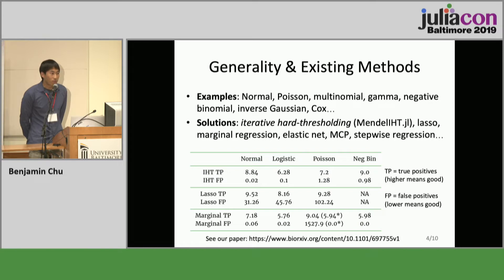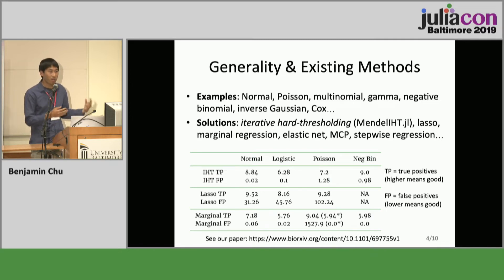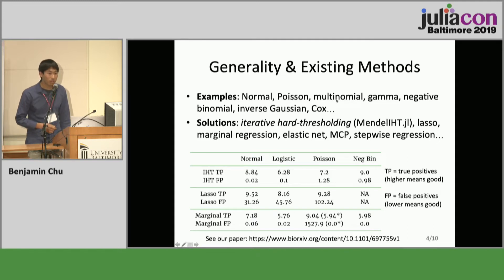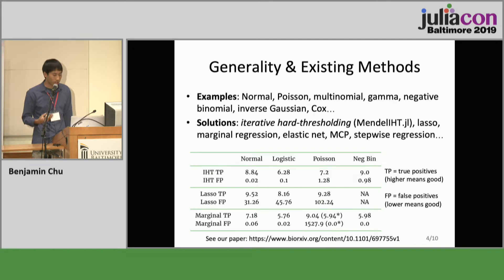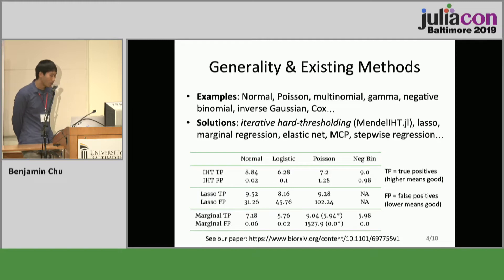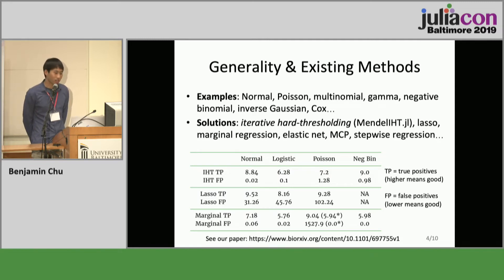I want to convince you that this is actually a pretty general problem. If you want to do some kind of regression, you can probably make it fit into this framework. These are just some examples. We are endorsing a new method called iterative hard thresholding (IHT), which came from compressed sensing about 10 years ago. It addresses a general problem that we're solving.